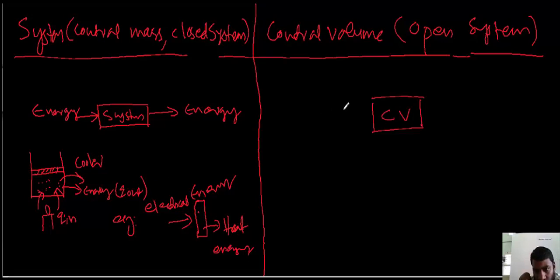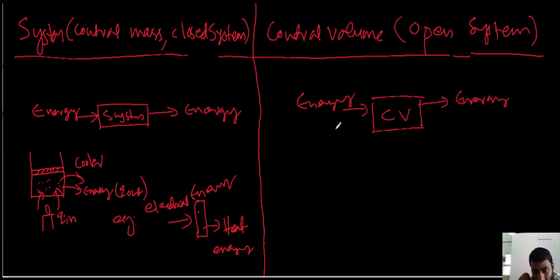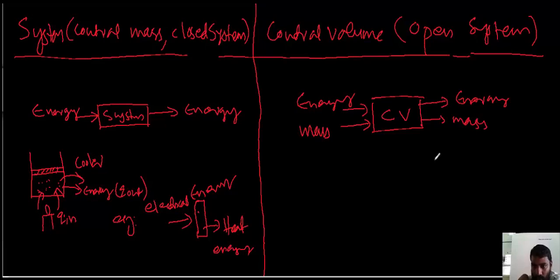Now, for a control volume, energy is coming in as well as energy is going out. One more thing: mass is also coming in as well as mass is also going out. Let me take an example of this type.